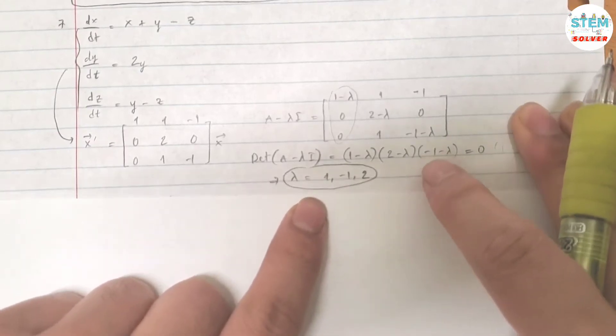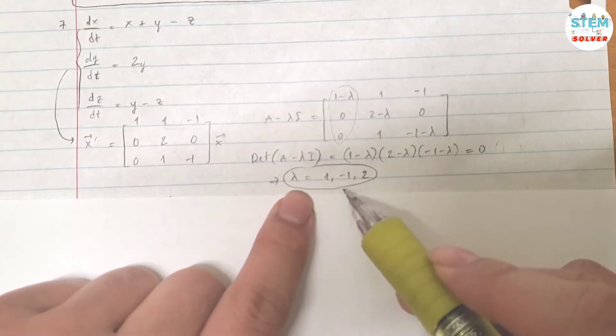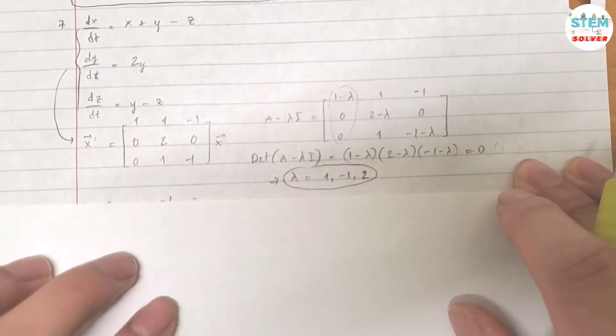So for lambda, you will get lambda equals 1, negative 1, and 2. So here are all your eigenvalues. With each eigenvalue, you will get an eigenvector. Let's figure it out.